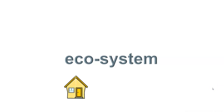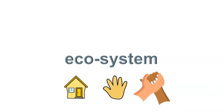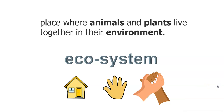Let's take a look at this word, ecosystem. I've broken it apart here for us. Eco is Greek for house. And system can be thought of as individual parts that when brought together, make a whole. So take your hands and your fingers, wave them together and put them together — that's the system, it works together. The definition of ecosystem is a place where animals and plants live together in their environment. The environment represents eco — it's the home. And the parts of the environment are the animals and the plants.